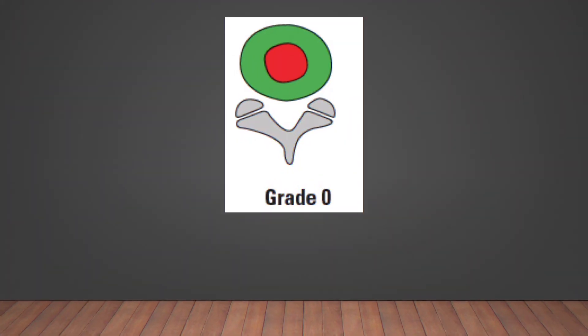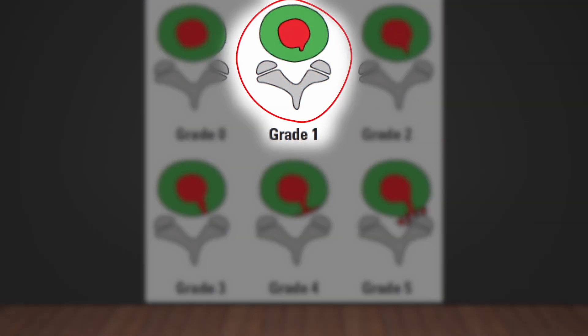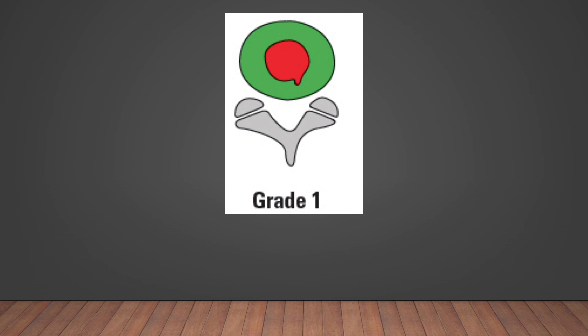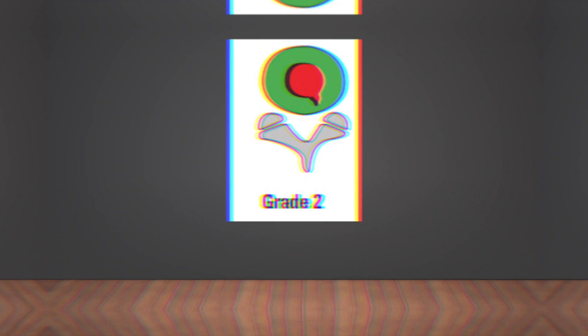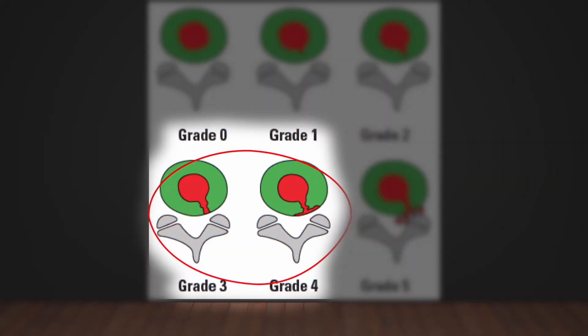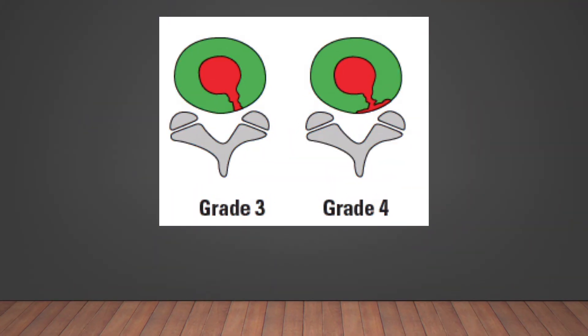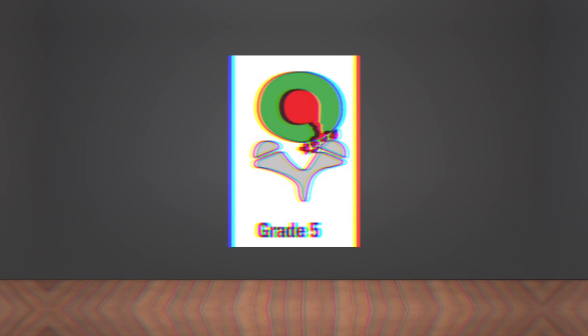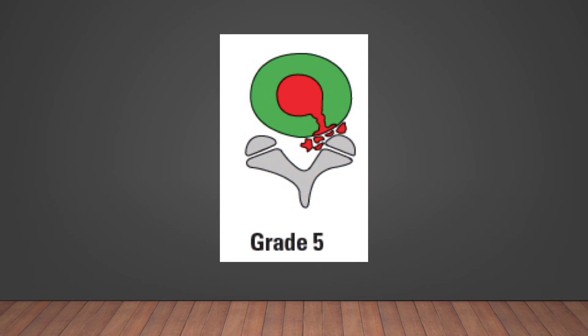Grade 0 is normal — there is no tearing of annular fibrosis. Grade 1: a small annular tear extends from the nucleus radially into the inner one-third of annular fibrosis. Grade 2: the annular tear has grown larger and is within the middle one-third of the annulus. Grades 3 and 4: the annular tear has completely ripped through the annular fibrosis. Grade 5: contrast media is leaking through the annular defect out into the epidural space.